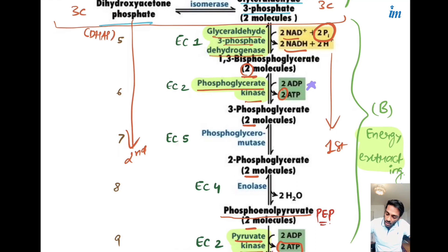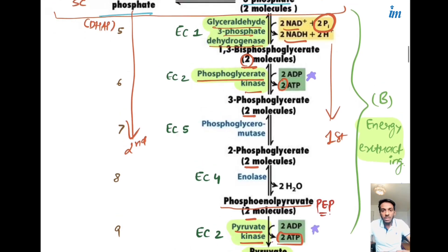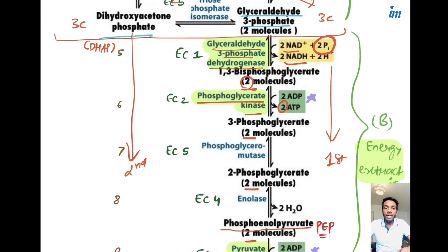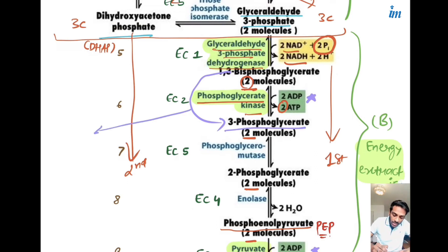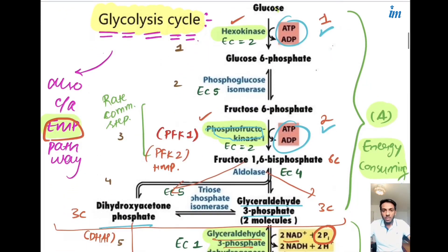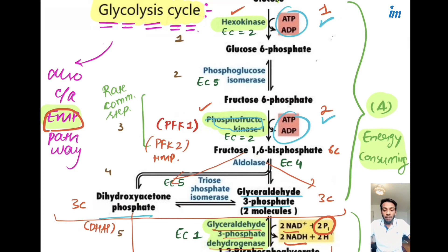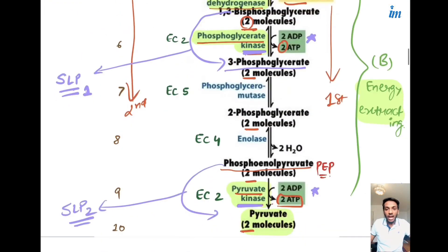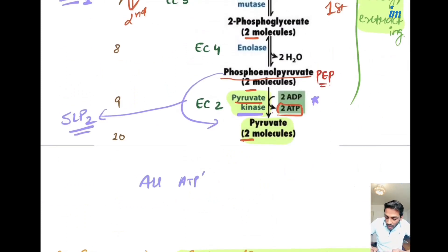The ATPs produced in the energy extracting phase are produced as a byproduct — we were not aiming to produce ATP, we were aiming to convert glucose into pyruvate, and in between we get the chance to produce ATP. By converting one substrate into another we get ATP, hence it is called substrate level phosphorylation (SLP) — SLP1 and SLP2. All ATP-related enzymes in glycolysis are kinases: hexokinase, phosphofructokinase, phosphoglycerate kinase, and pyruvate kinase.